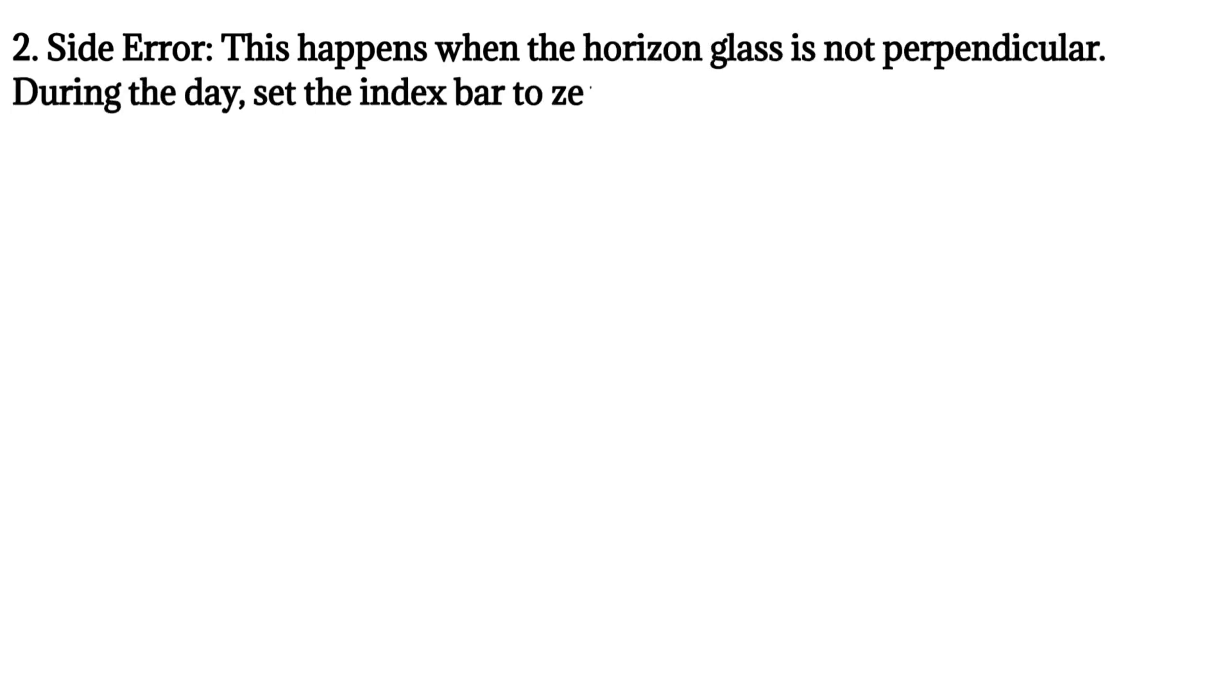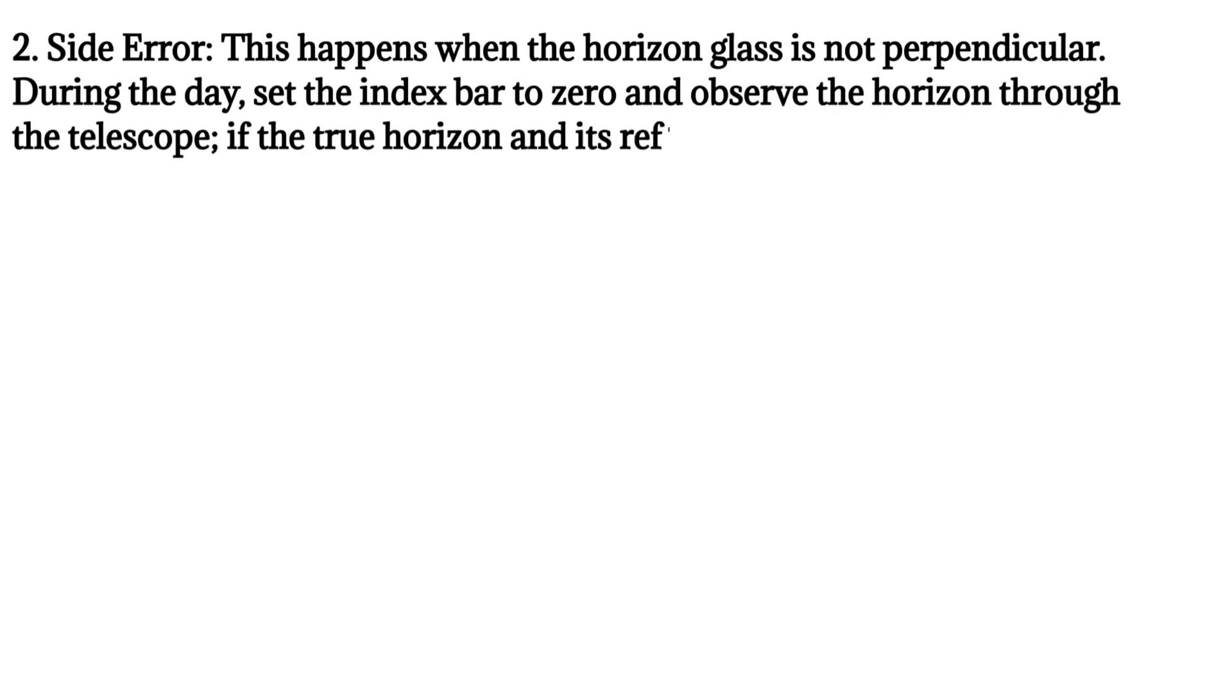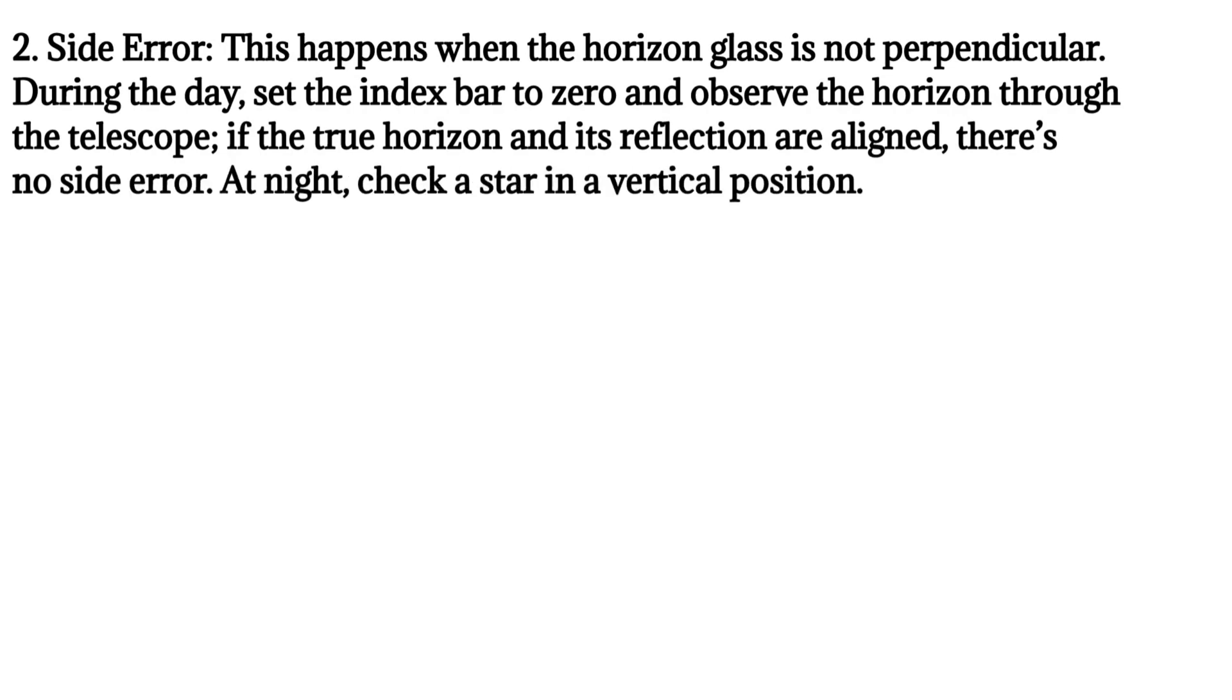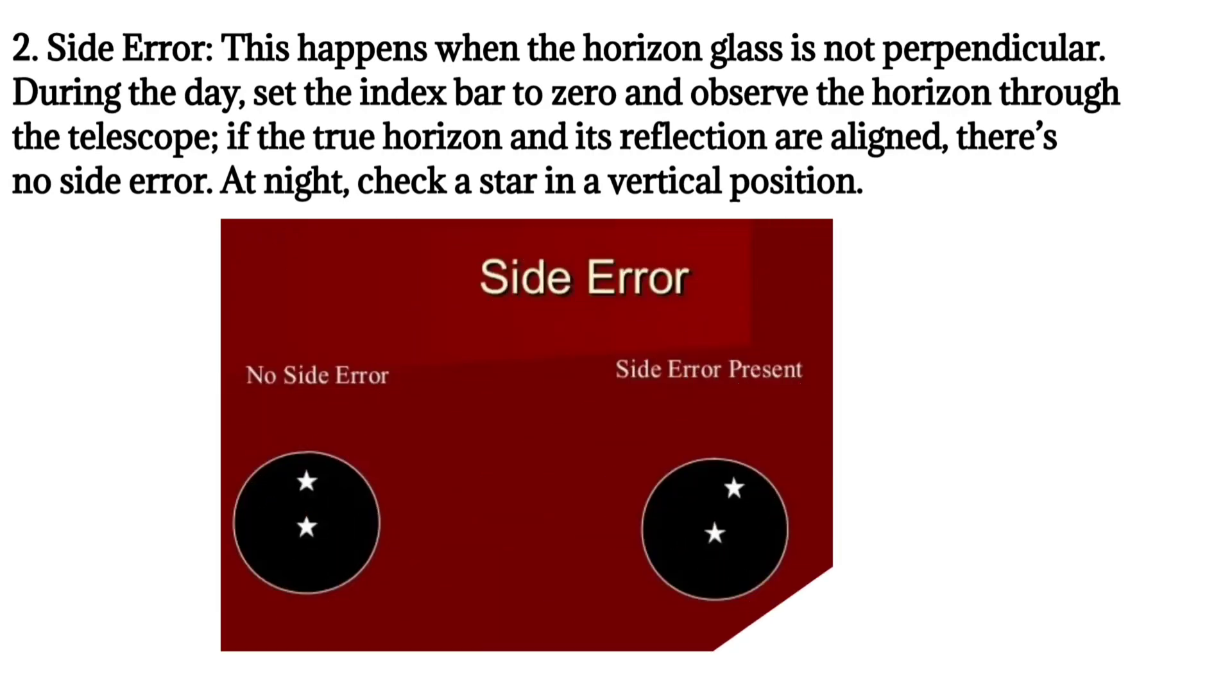During the day, set the index bar to zero and observe the horizon through the telescope. If the true horizon and its reflection are aligned, there's no side error. At night, check a star in a vertical position. Adjust the second screw at the back of the horizon glass if necessary.